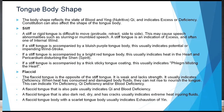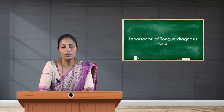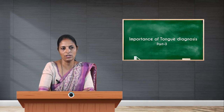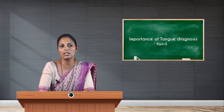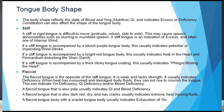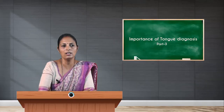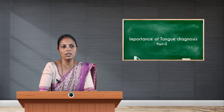A flaccid tongue, opposite to the stiff tongue, is also difficult to move and indicates weakness and lack of strength — usually indicating deficiency. When heat has consumed and damaged body fluids, they cannot rise to nourish the tongue. This can indicate yin deficiency, qi deficiency, or blood deficiency. A flaccid tongue that is pale indicates deficiency of blood.